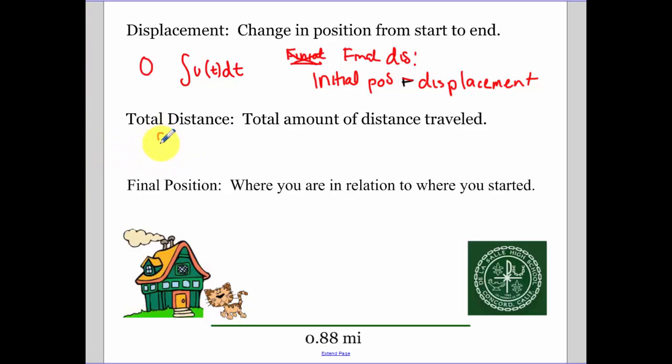Now total distance. The total distance is the integral of the absolute value of velocity. So it's just looking at what's the total amount of distance that I've traveled. So if you think about my example of me walking to and from school, the total amount of distance that I've traveled is 1.76 miles. I walk to and from school. That's 0.88 miles times two. Now your final position is where you are in relation to where you started. In the example of my walking to and from school, my final position would be zero. Let's say I didn't go as far and I stopped maybe at Safeway and I slept at Safeway for the night. Then my final position wouldn't be zero. It would be some positive number because Safeway is on my way home.